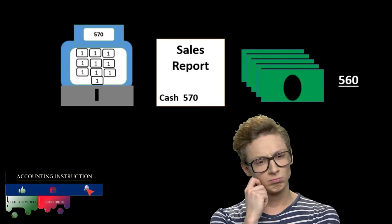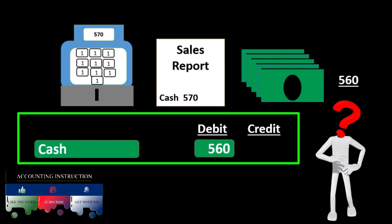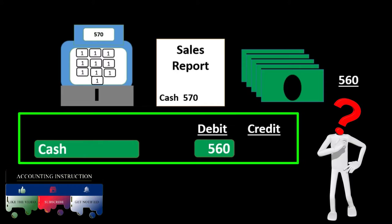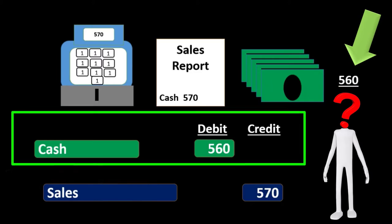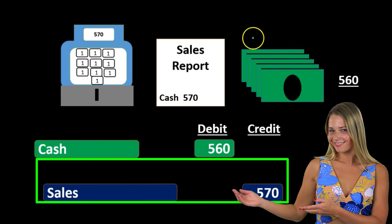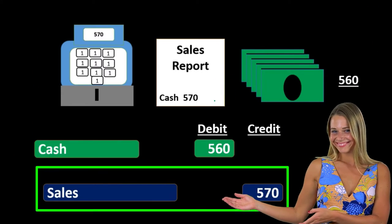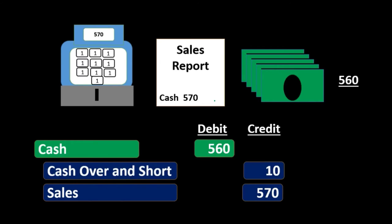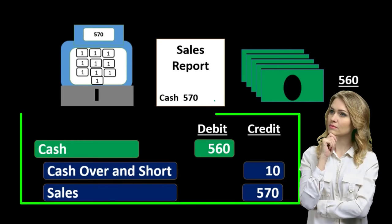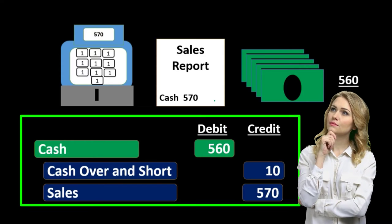When we report this, debits and credits work as follows: cash is debited for what we have — the actual currency we counted. We credit sales for what was reported, what we believe we actually sold according to the cash register. The difference needed for debits to equal credits is that ten dollars.